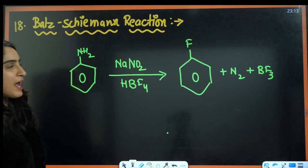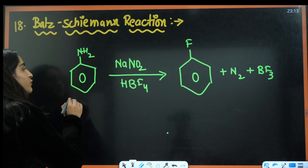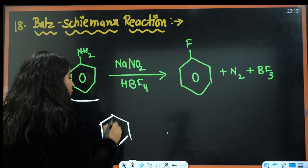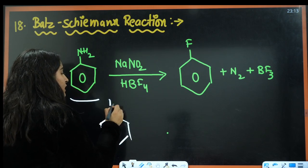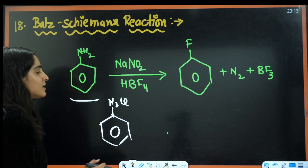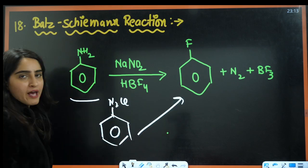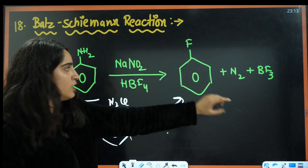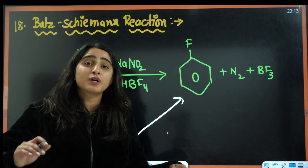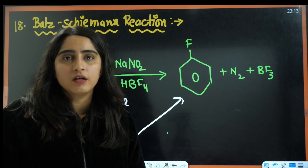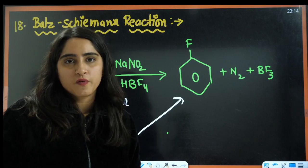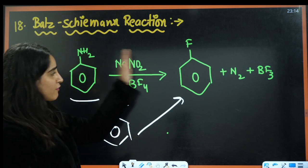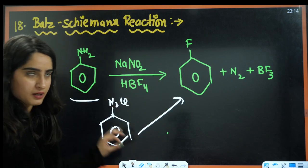Next is Balz-Schiemann reaction. Again aniline is converted into a diazonium salt, and then we add HBF₄. This gives fluorobenzene along with N₂ and BF₃. This method is used because direct formation of fluorobenzene is a very explosive reaction.